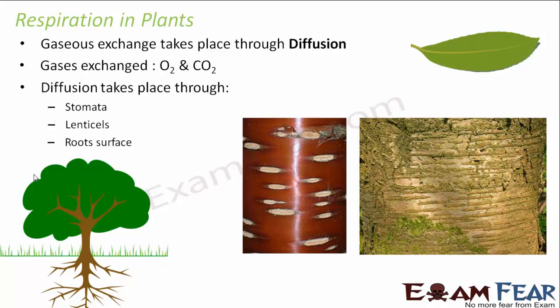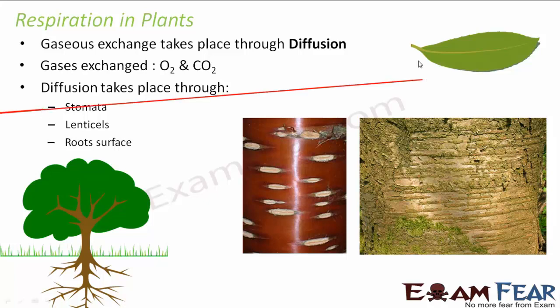The question is which part of the plant actually takes part in this gaseous exchange. This diffusion takes place through stomata — tiny pores which are present on the surface of the leaves.